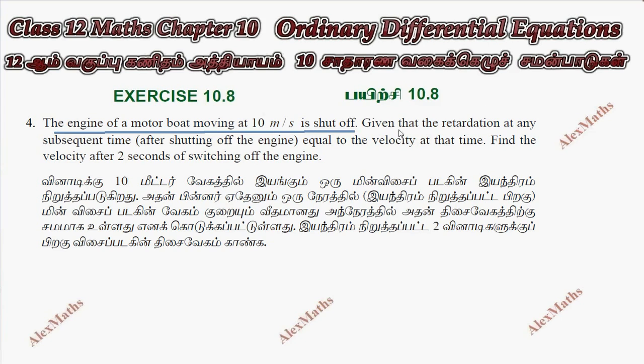Given that the retardation at any subsequent time after switch off is equal to the velocity at that time, so v is equal to the velocity. Therefore dv by dt, the change in velocity, this is the retardation at that time, is equal to minus v. The retardation at any time is minus v at any time.